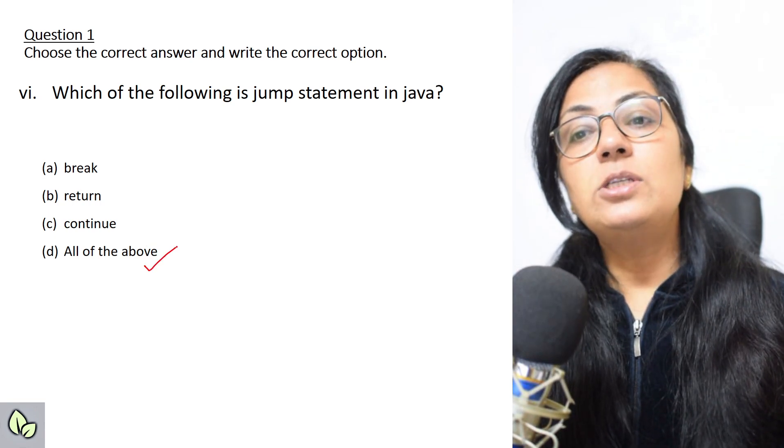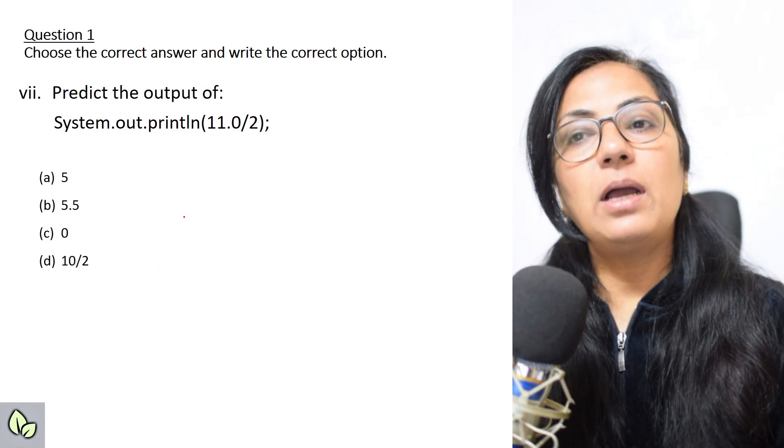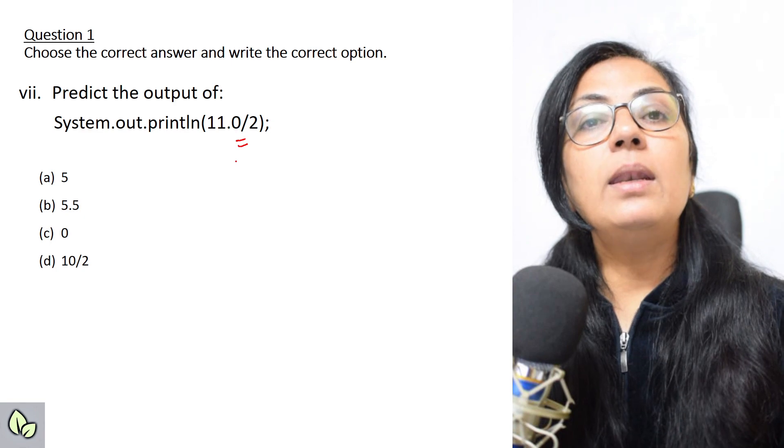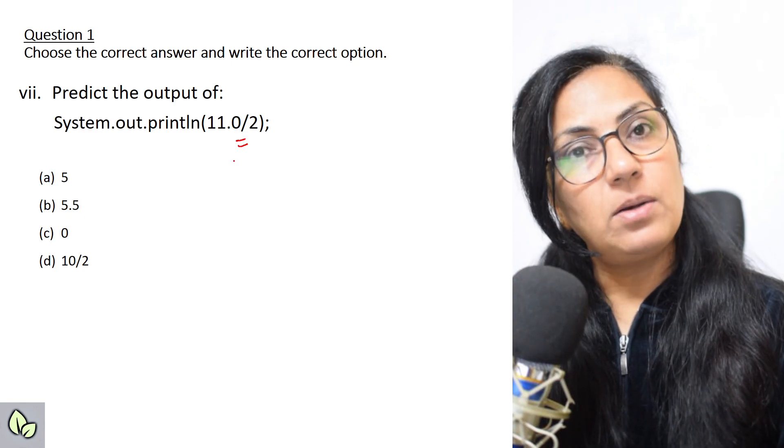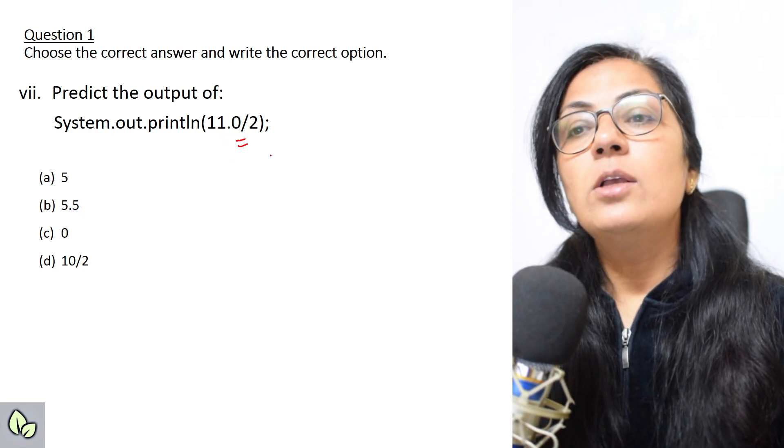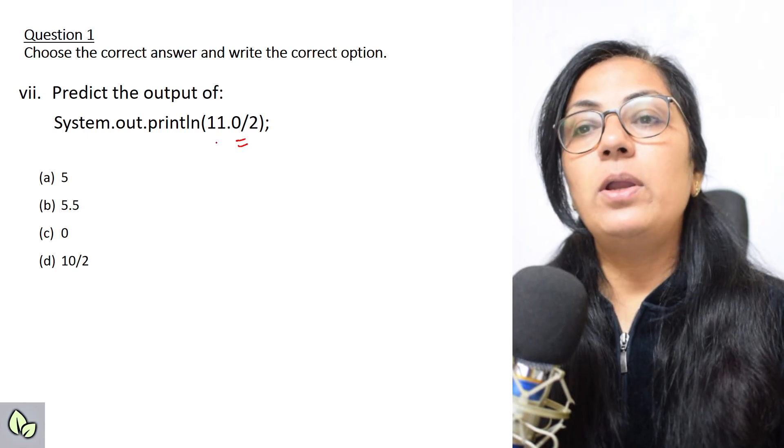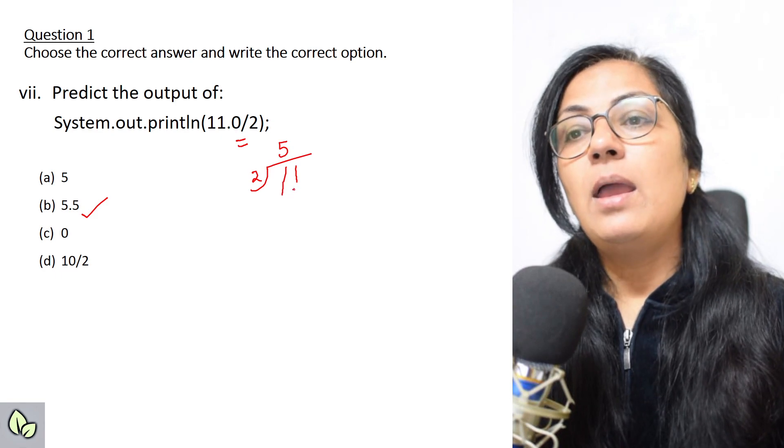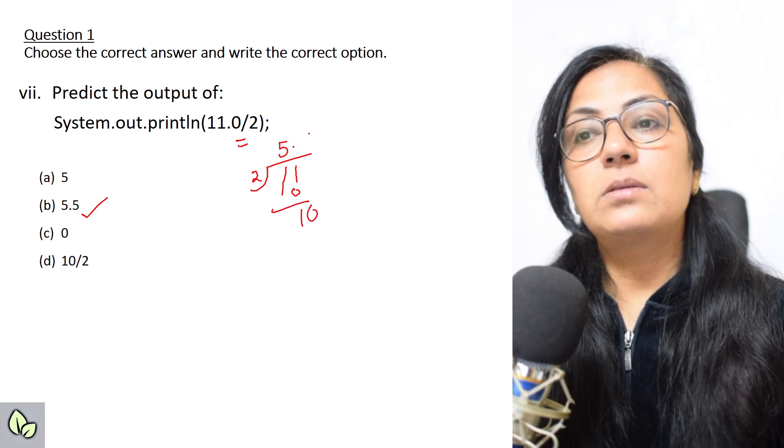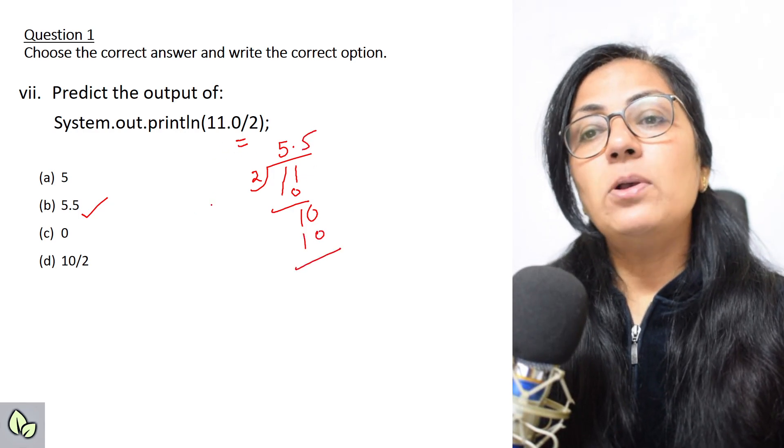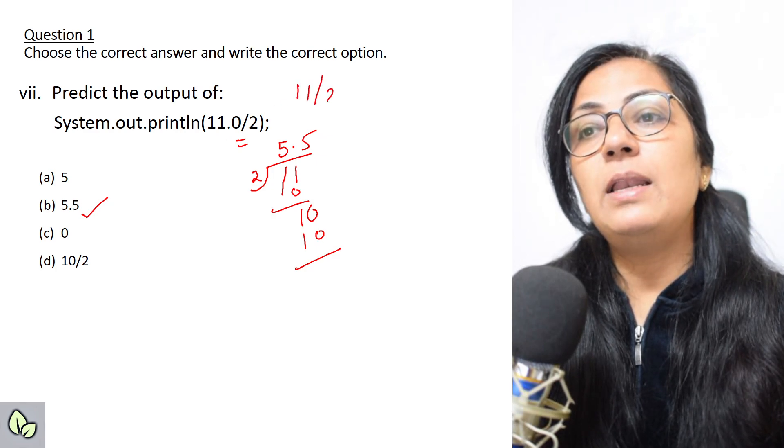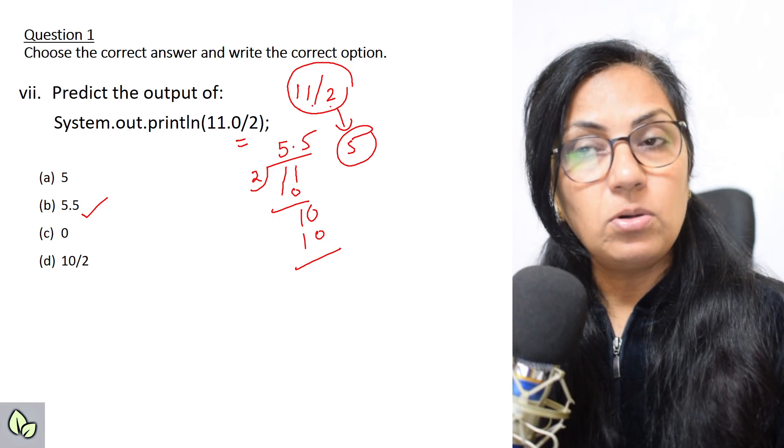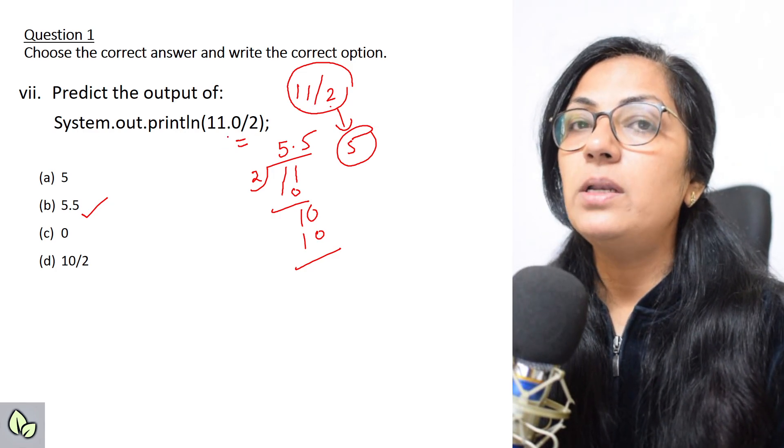Predict the output of System.out.print 11.0 slash 2. The slash sign gives you the quotient part, but when integer division is there, both numerator and denominator are integers. But here it is 11.0, so 11.0 will give you the answer in points. So the answer will be 5.5. If you divide 11 by 2, you get 5 is 10 and remainder is 1. If the quotient is 11 by 2, the answer will be 5, because both are integers. Integer division gives you the quotient part, but if any of the numerator or denominator is in points, the answer will be in fractions.